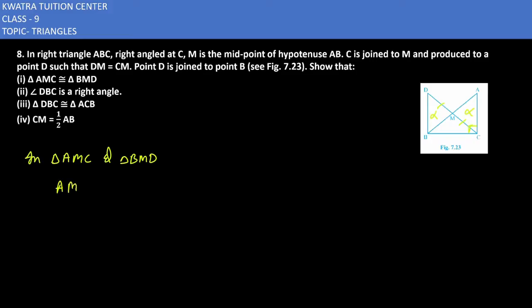First, I can write AM is equal to BM. Why? Because M is the midpoint of AB. So AM equals BM. How can you take the other thing? DM is equal to MC. Because this is given.